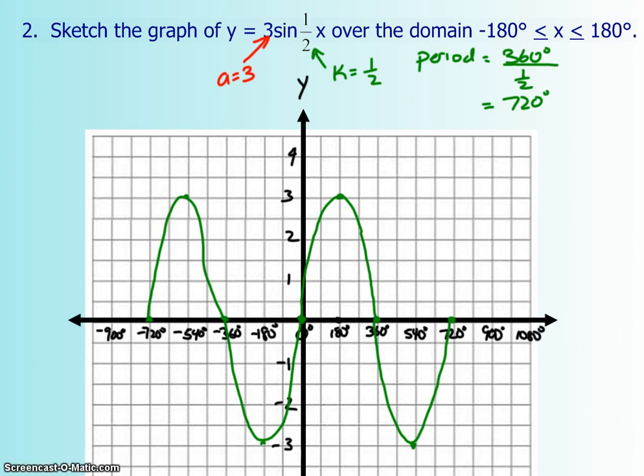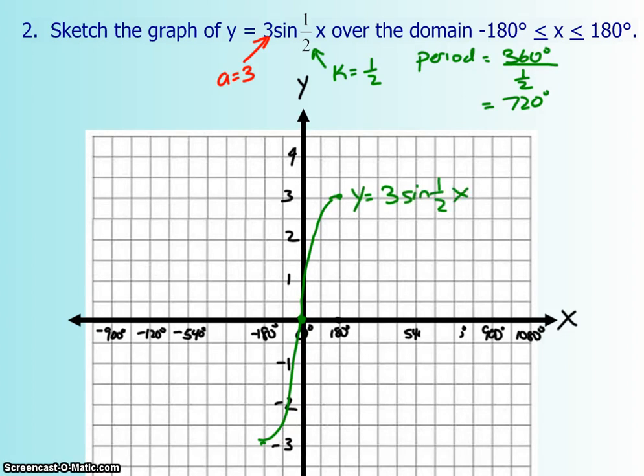So that is the sine graph, but it's not within our domain. They said they wanted only from negative 180 to 180. So what we have to do is we're just going to erase everything that's not within those boundaries. So let's get rid of all of this. And then we're also going to get rid of all of this. So your graph is going to look like this.